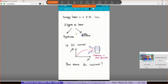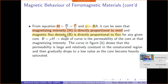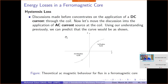Then, energy losses in ferromagnetic core — this is another interesting topic. In this beginning chapter, we discuss energy losses like hysteresis losses and eddy current losses. When we arrive at chapter 2, 3, and 4, we will discuss in more detail these losses associated with AC machines, DC machines, transformers, and so on. So basically, this is the fundamental — what is actually the hysteresis loss?